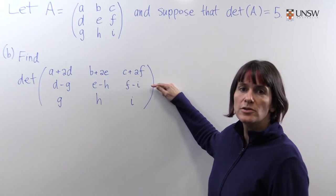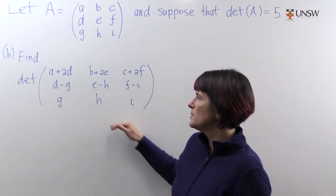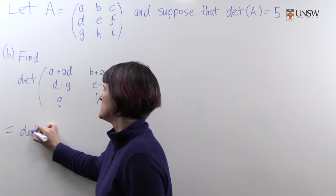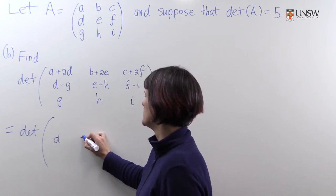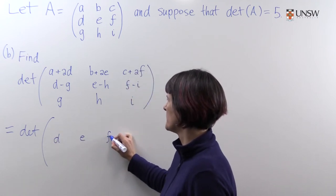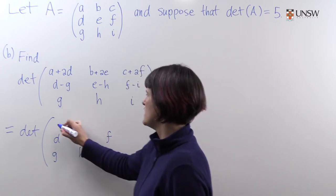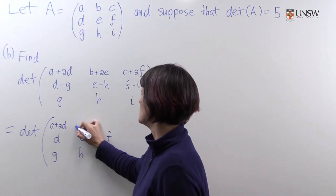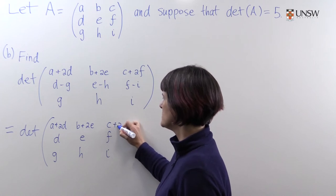So we can just reverse those operations until we obtain A. And we can see the first thing we should do is add row three to row two. So the determinant of this matrix is the same as the determinant of the matrix that you get when you do that. So it's going to fix up the second row. The third row is already fixed. And we've still got up here A plus 2D, B plus 2E, and C plus 2F.